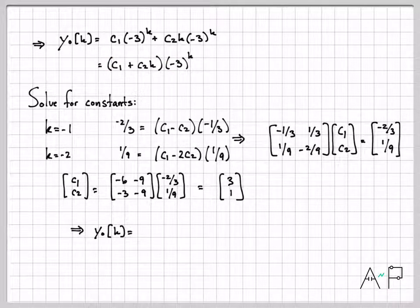Now I know the numbers to go plug in, so I can write down my final answer for the zero input response. It's 3(-3)^k + k(-3)^k because c₂ was equal to 1, and that is my zero input response for the case of having some repeated roots.